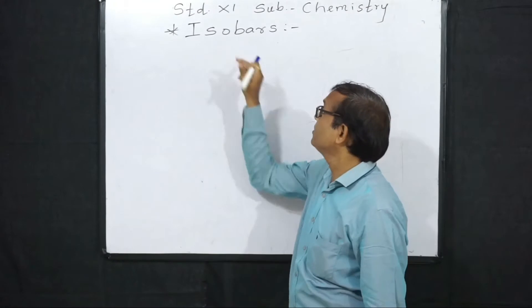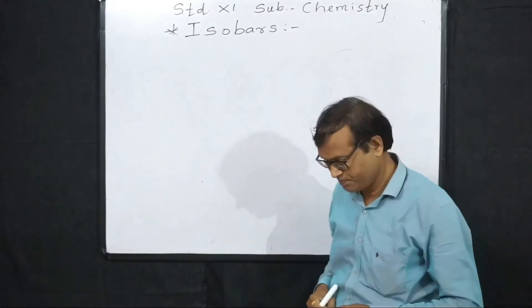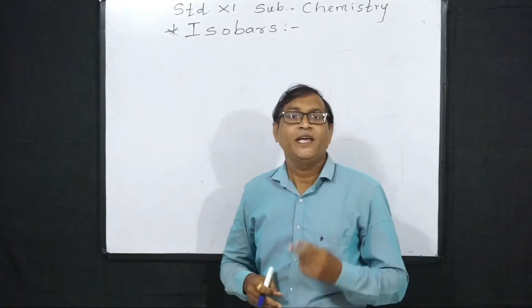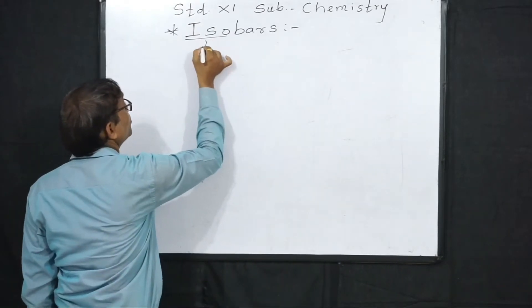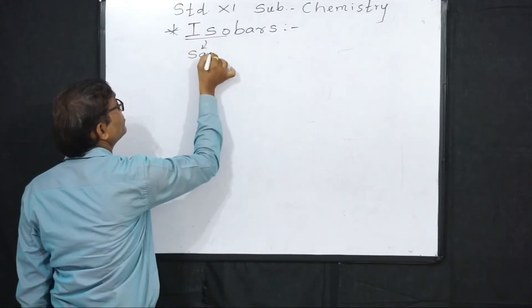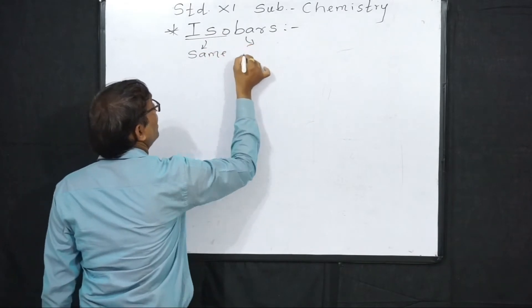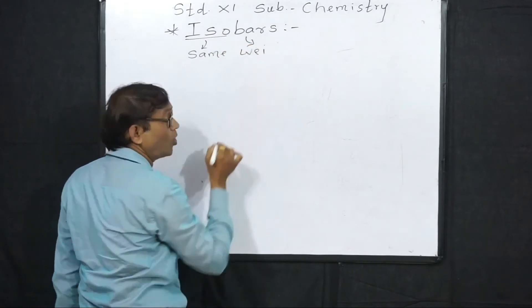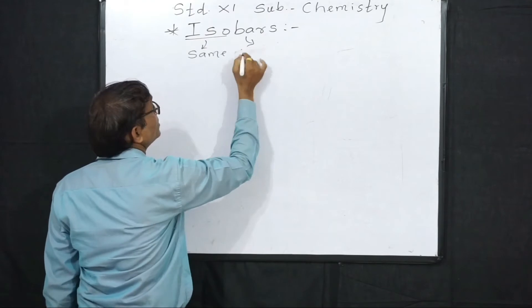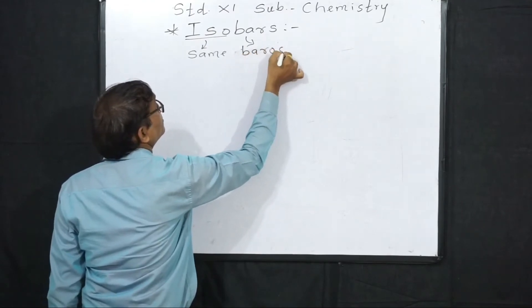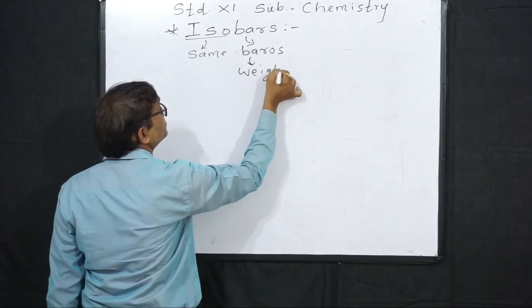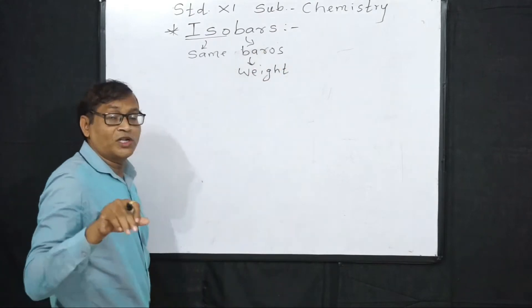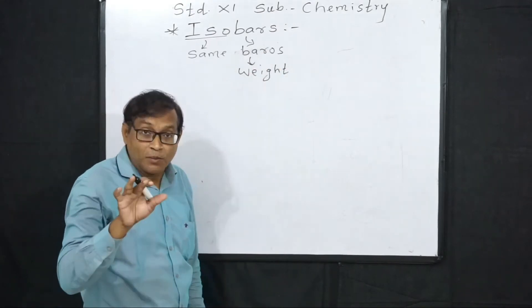Now we are going to learn about isobars. Isobars - the first part 'iso' means same. The second part is obtained from the Greek word 'barros' which means weight. So what does same weight mean?